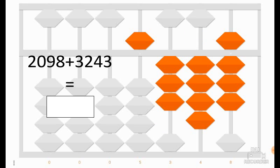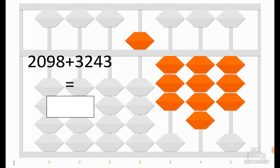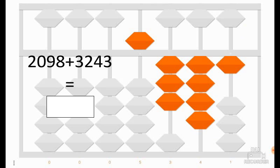Finally, we would like to add 3, but we cannot because only one coin remains. So 3 is equal to 10 minus 7. We add 10 and we remove 7. And we have the result: 2098 plus 3243 is equal to 5341.